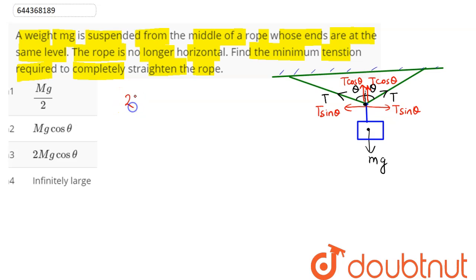We have 2T cos theta in the plus y direction balancing the weight mg. Hence, the tension comes out as mg divided by 2 cos theta.